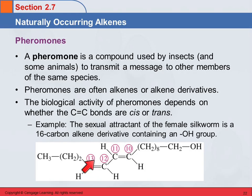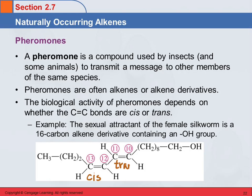Let's identify these. This double bond between carbons 12 and 13 — is that cis or trans? That's cis, because we look at the hydrogens and we see they are on the same side of the double bond. So this bond is cis. And what about the other one between carbons 10 and 11? That's trans, because the hydrogens are across from each other.